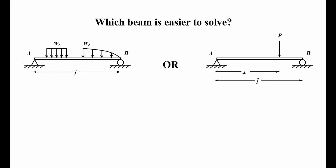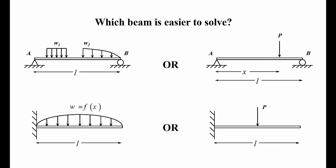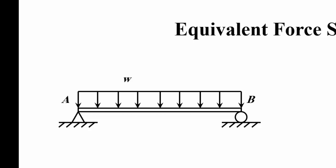Most of you will go with the beam on the right because it looks simpler. Next, what about these two? Again most of you will pick the one on the right — but actually what we can do is transfer whatever we have on the left to the one on the right. It doesn't really matter which one you start with or how difficult your beam looks; you can always simplify it to a certain degree. Let's look at what I call an equivalent force system for beams.